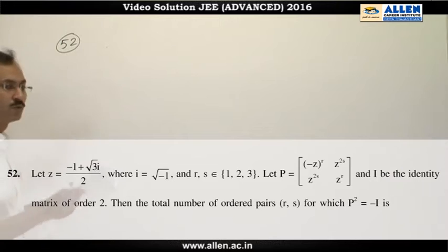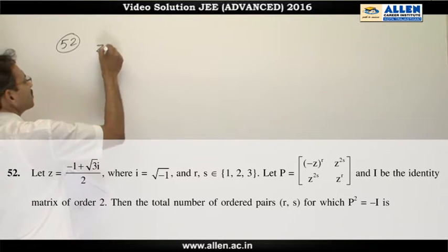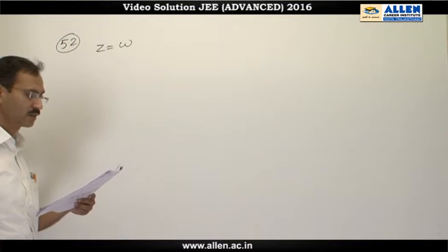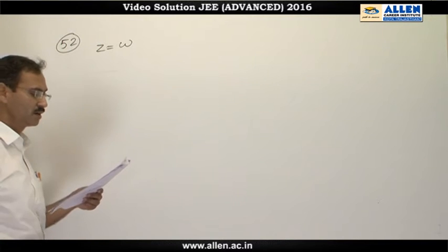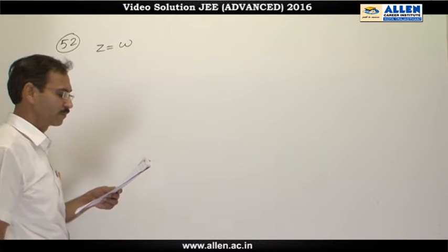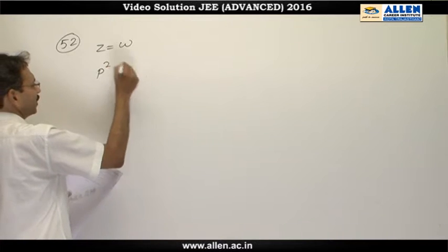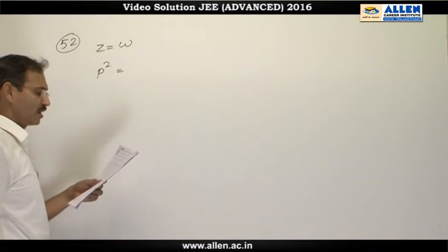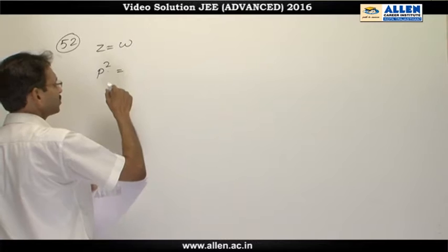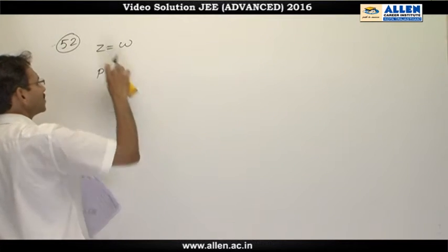In question number 52, this z is basically the cube root of unity. Let us consider it omega — the usual notation — and I will calculate P squared and equate it to minus i. While writing P squared, I will consider z as omega.